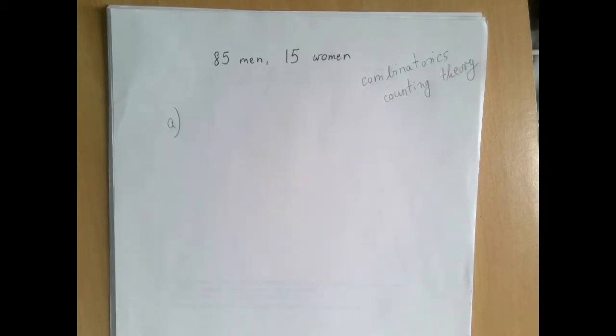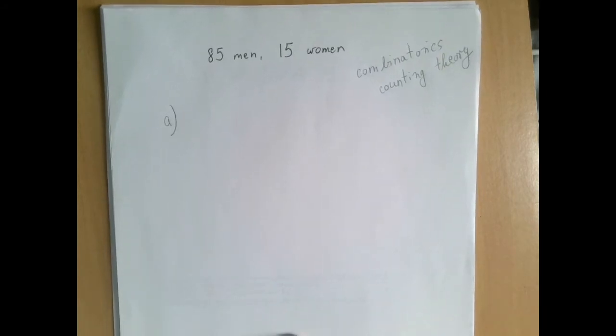For example, the handshake problem illustrates this technique, the technique of coming up with a smart choreography that helps us count things. So for now, it doesn't matter who is men, who is women, it's just 100 people.